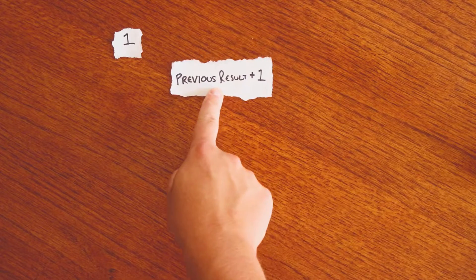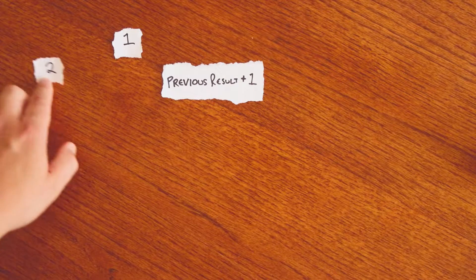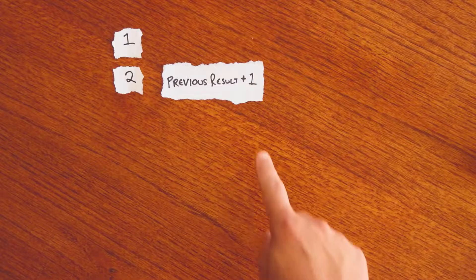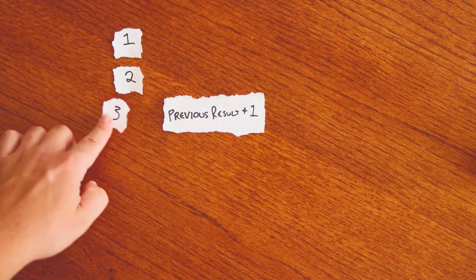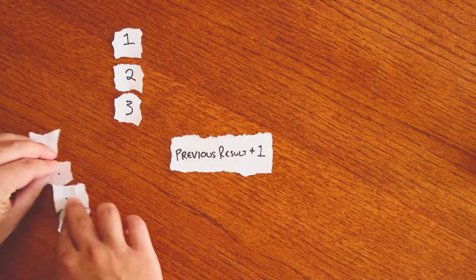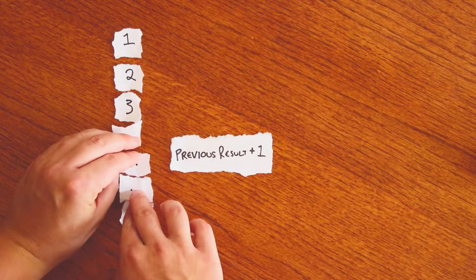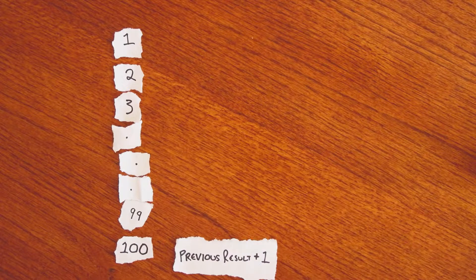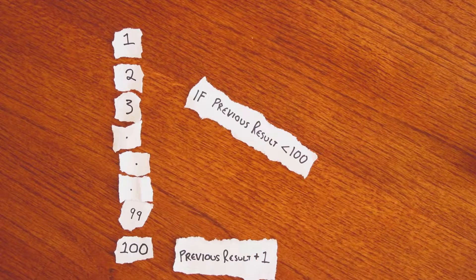A basic recursive program in SQL Server may look like this. We have a result saying the number one, and then we run some code that says previous result plus one, which would give us two. We then run that code again and our next output is three. We can keep going all the way to, say, number 99 and then finally 100, until we hit a condition we wrote saying previous result is less than 100.